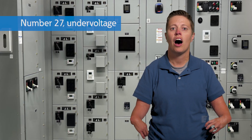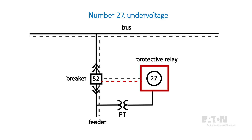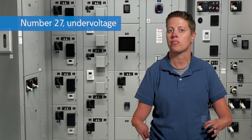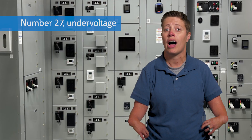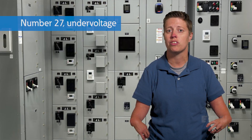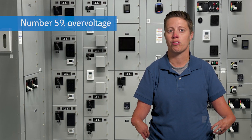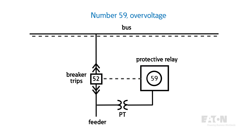Number 27, undervoltage. The undervoltage function sends a trip signal when the measured voltage on the system drops below a set value. Undervoltage protection is important for electromechanical devices like pumps and motors, as undervoltage conditions draw higher currents which can damage devices and reduce overall lifespan. Number 59, overvoltage — this function sends a trip signal when the measured voltage exceeds a set value.